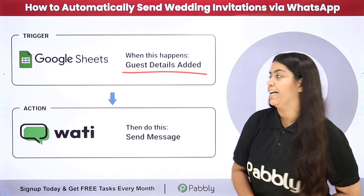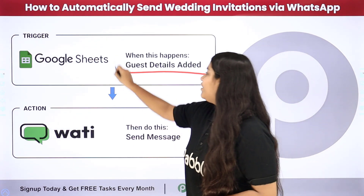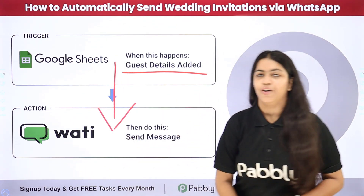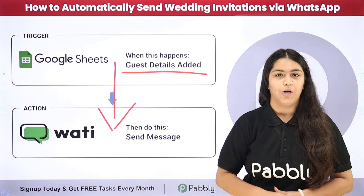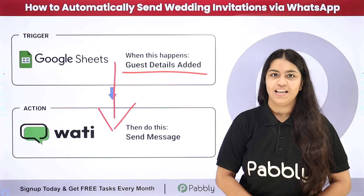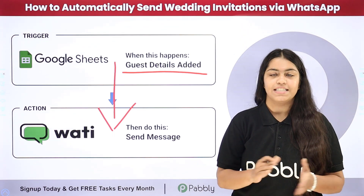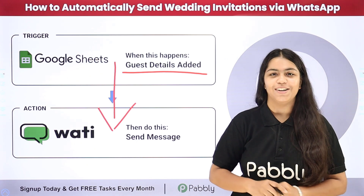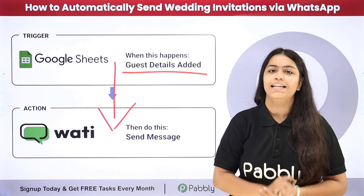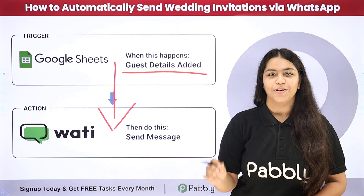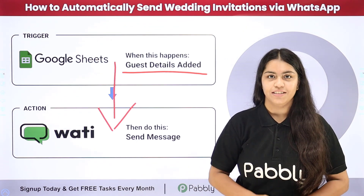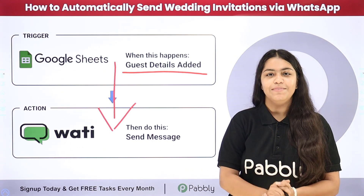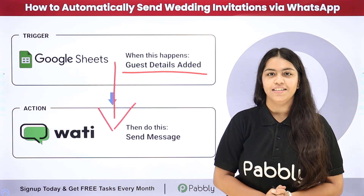To do this we are going to create a connection between Google Sheets and Vati. I am going to use Vati to send WhatsApp messages, and I will create this connection with the help of an amazing automation software which is Pabbly Connect. Do you also wish to learn this process step by step? Then let me take you to my computer screen.